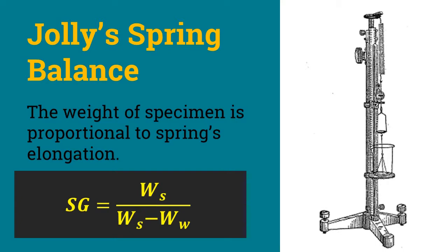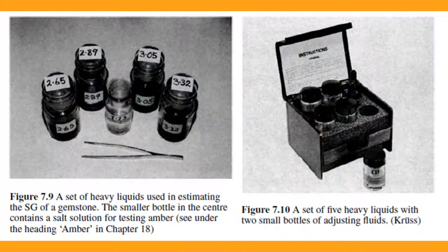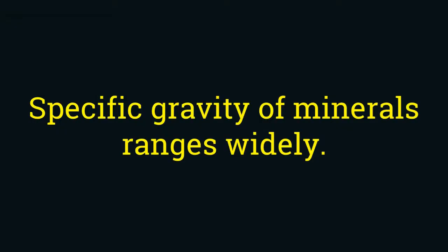Another technique, most commonly used for finding the specific gravity of gemstones, is dipping them in heavy liquids. These heavy liquids are of known specific gravity, labeled on the container. If the gemstone has the same specific gravity as the fluid, it will float in the middle of the solution. If it has a lower specific gravity, it will float to the top; otherwise it will sink.